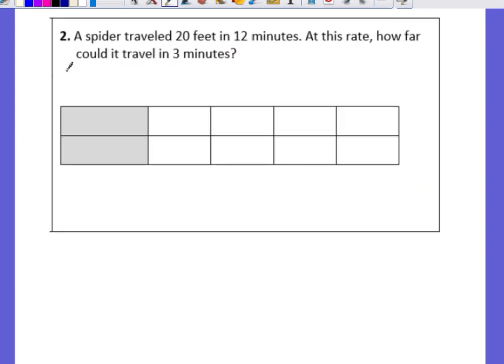Okay example two. A spider traveled 20 feet in 12 minutes. At this rate how far could it travel in three minutes? Alright so what are we comparing here? Feet and minutes. So we're going to write our labels: feet, minutes. And it doesn't really matter where you put them in the table. I would always like to leave room on either side. So if I'm increasing I can go to the right. If I'm decreasing I can go to the left. So 20 feet in 12 minutes. This is the rate that I know, the given rate. And I want to change this to three minutes. So I'm changing 12 minutes to three, and I need to find out how many feet.